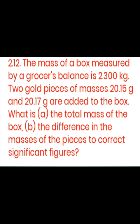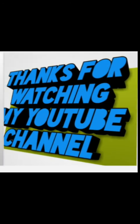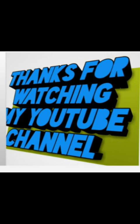The mass of a box measured by a grocery balance is 2.300 kg; two gold pieces of mass (given in grams) are added to the box. Find the total mass and the difference of the pieces. First, you must understand that to add or subtract physical quantities, their units must be equal — convert kilograms to grams or grams to kilograms before adding. Also, when adding decimals, align the decimal points. If you haven't subscribed to the channel yet, please subscribe to keep getting useful videos like this.